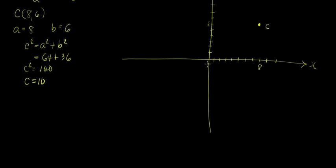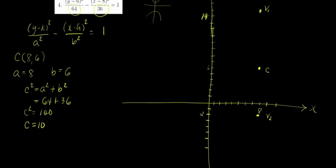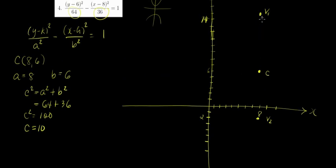Mag-count naman tayo pababa. So mag-start tayo from 6, and then 8 units downwards. So that's negative 2. Counting 1, 2, 3, 4, 5, 6, 7, 8. So at negative 2, here is our second vertex.